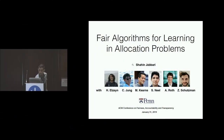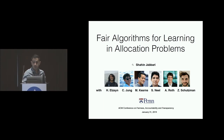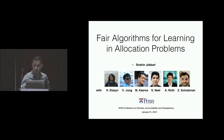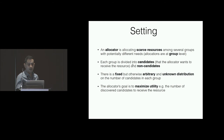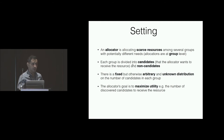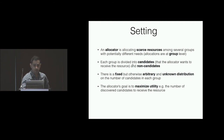Our last speaker for the session is Shaheen Jabari. Hello, my name is Shaheen, and today I'm going to talk about fair algorithms for learning and allocation problems. This is joint work with co-authors at the University of Pennsylvania. In an allocation problem, an allocator allocates a set of scarce resources among several groups that might have different needs for the resource. We assume throughout that allocations are made at the group level.